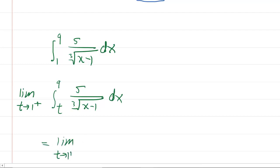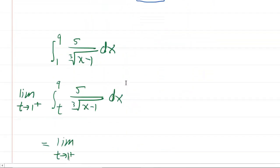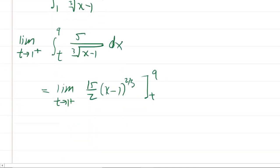So you're going to have the limit as t approaches 1 from the right. And if you recall, when we integrated, we had gotten 15 halves x minus 1 to the 2 thirds. It's the same integral, so the same result from a lower bound of t to an upper bound of 9.